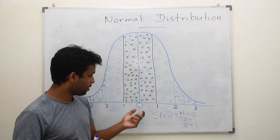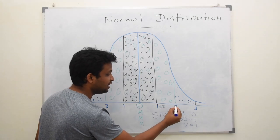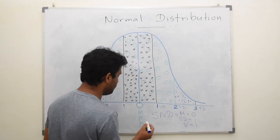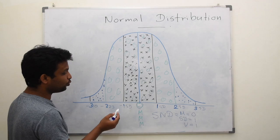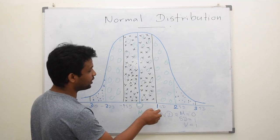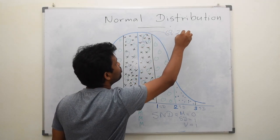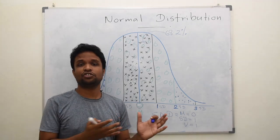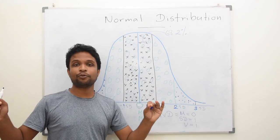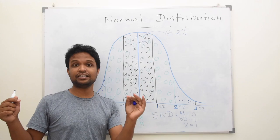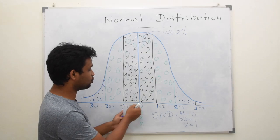In a normal distribution, between mean minus 1SD and mean plus 1SD, approximately 68.2% of the observations fall. For example, if there are 1000 students whose marks are distributed normally, 68.2% — that means 682 students — will be in the range of mean plus or minus 1SD.